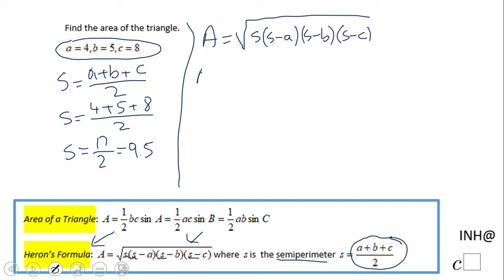So we're going to have here 9.5 times 9.5 minus A, minus 4, 9.5 minus B, 5, and 9.5 minus C, which is 8.